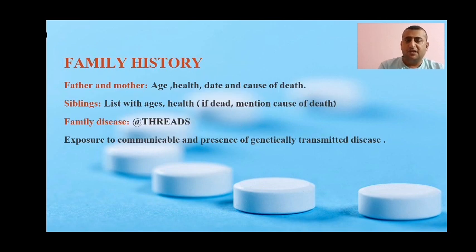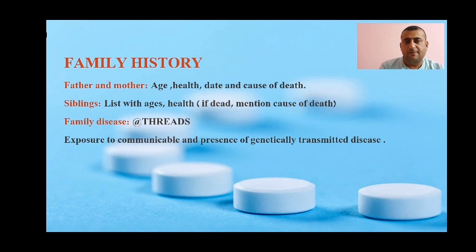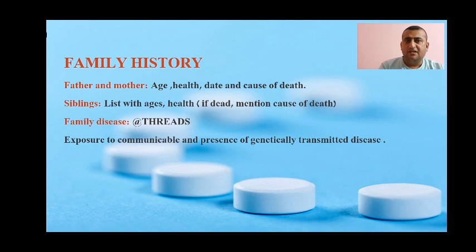In family history, ask about father and mother — their age, health, and if they are dead, the date and cause of death. For siblings, list them with their ages, health status, and if any are dead, the cause of death. Record all history of specific diseases in THREADS: thyroid disorders, hypertension, rheumatic fever, epilepsy, anxiety, arthritis, diabetes, depression, surgical illness, and so on. Exposure to communicable diseases and presence of genetically transmitted diseases are also very important family history.